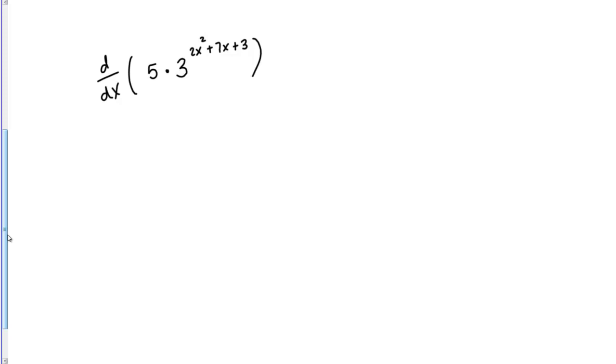I put that there to sort of initially trick you. Some people might be tempted to combine that 5 and that 3 and write this as 15 raised to the same power, but that is incorrect. Since the 3 has an exponent and the 5 does not, we can't combine them through simple multiplication like that. But the 5 doesn't really pose a problem because it's just a constant being multiplied by the piece that we're really interested in taking the derivative of. If I want, I can just simply pull it out in front of this whole derivative like this.